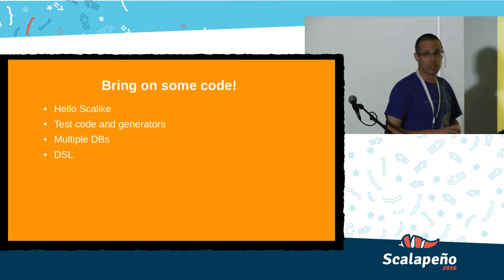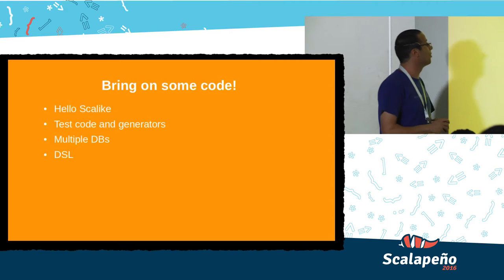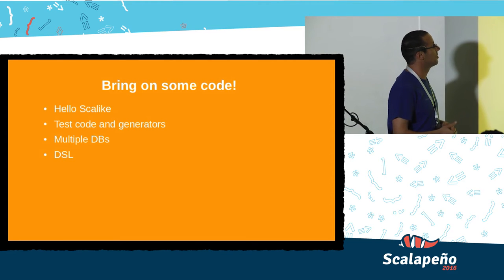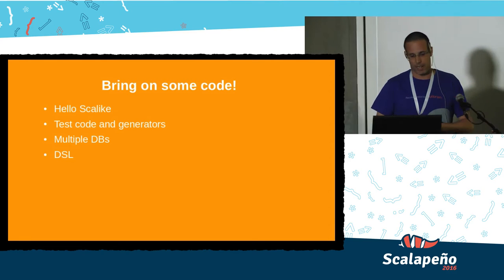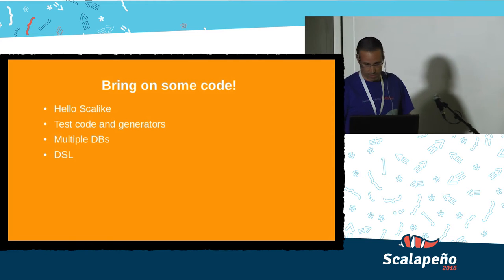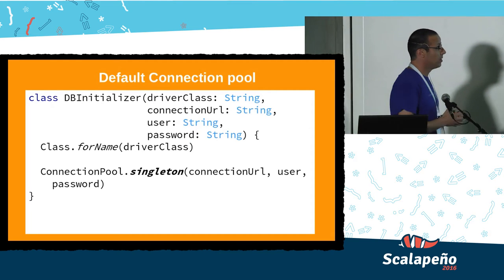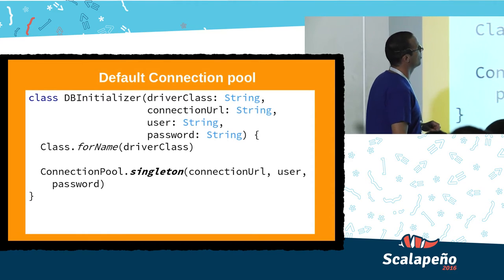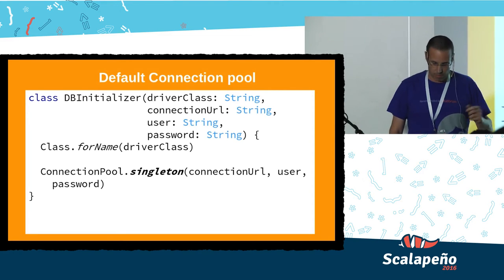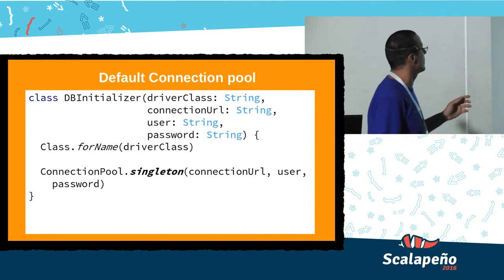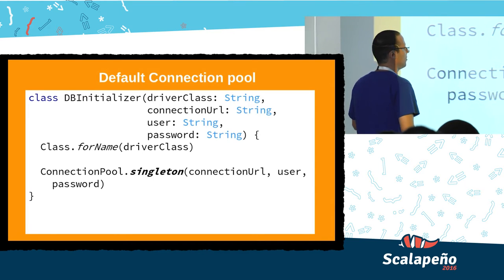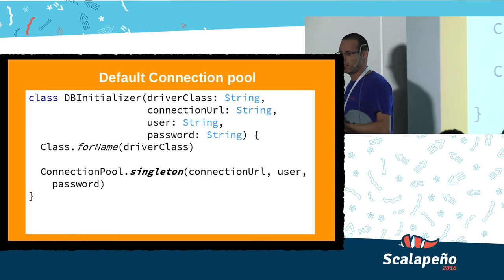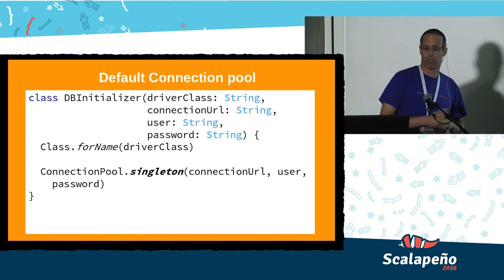So that's the part where we start looking at some code. I'll go through a Hello ScalikeJDBC example, talk about test code and generators, see how we can handle multiple DBs, and finalize with DSL. Before you write any query, you need to establish a connection pool. It's quite simple: you provide the driver class, load it to the JVM, and create a connection given the URL, the user, and the password. Implicitly you then have everything needed behind the scenes to run the query.